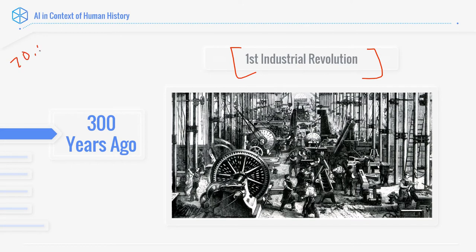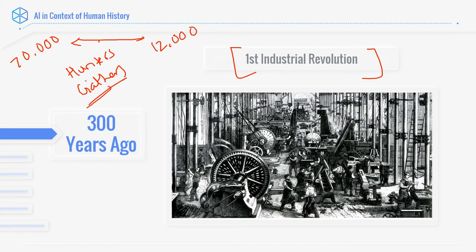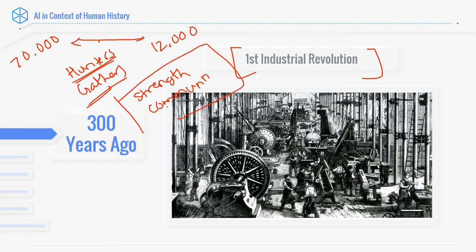From 70,000 years ago to 12,000 years ago, we were mostly hunter-gatherers. What was most in demand in that time was strength — either physical strength or communication. When we say communication, it's not public speaking but more like relationship building. You either have strength as an individual or strength in numbers. So anyone with better emotional intelligence would also be very valued — someone who can bring people together and make them work together.